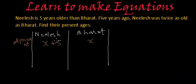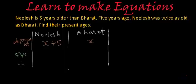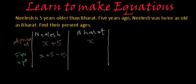The next part of the statement says: five years ago, Nilesh was twice as old as Bharat. So let's calculate their ages five years ago. Five years ago, Nilesh's age would have been X plus 5, which is his present age, minus 5, which equals X. And Bharat's age would have been X minus 5.